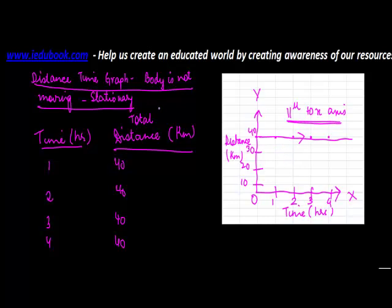When the body is not moving, is stationary or is at rest, the distance-time graph curve is a line which is parallel to the x-axis. If you were to find out at any given point in time the total distance covered by the body, in all cases the answer is going to be 40 kilometers.